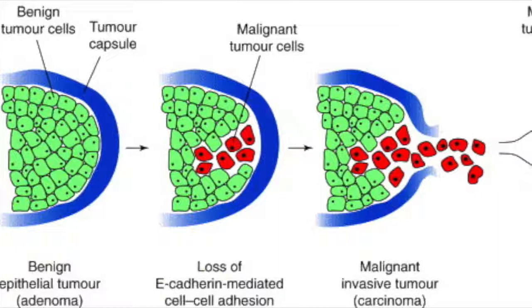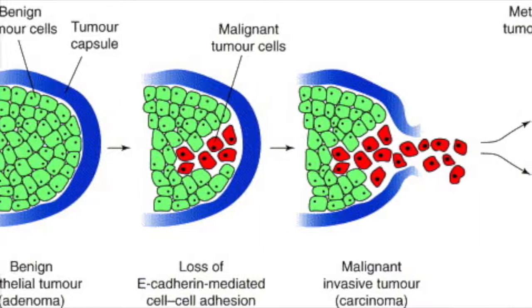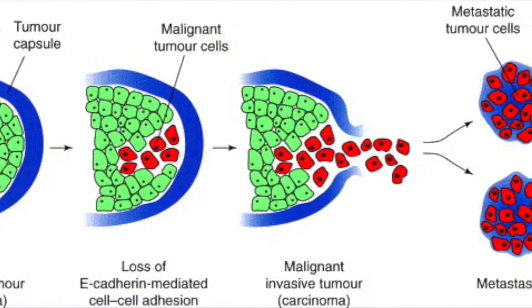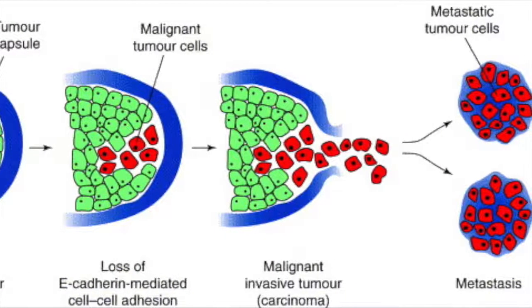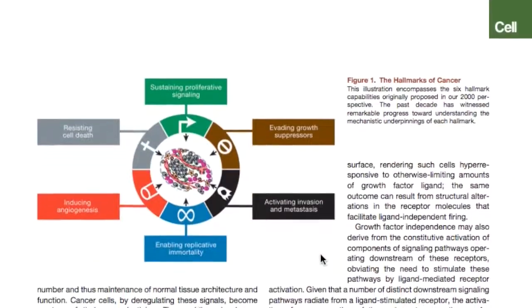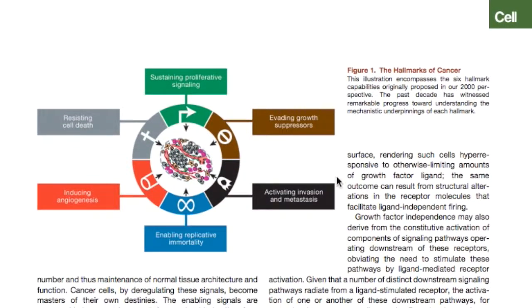However, it is long known that E-cadherin and some other types of cadherins indeed act as tumor suppressors by suppressing the cancer property of cellular migration. Activating invasion and metastasis is recognized as one of the six hallmarks of cancer.